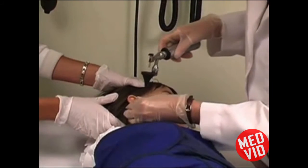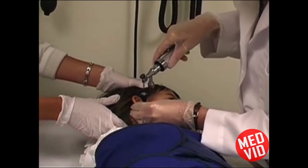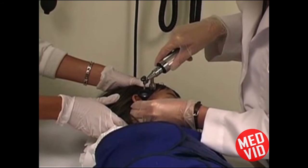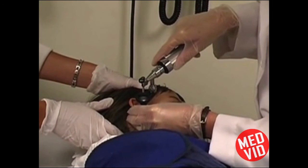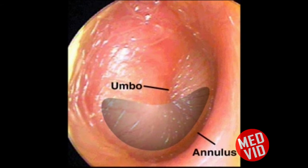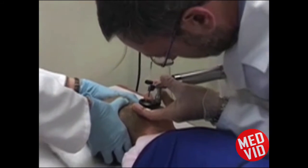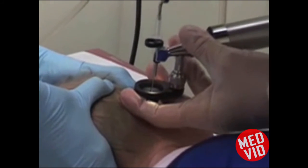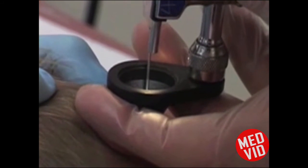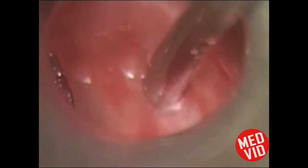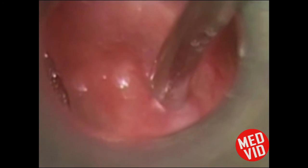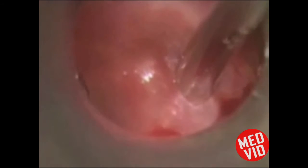The steps of the procedure are as follows. Insert the otoscope into the external auditory canal using your dominant hand and visualize the umbo and the annulus. Once the instrument is in the proper position, use your non-dominant hand to hold the otoscope in place. Insert the needle attached to the tympanocentesis aspirator, which is in turn attached to the suction device, and penetrate the inferior part of the tympanic membrane with the needle.